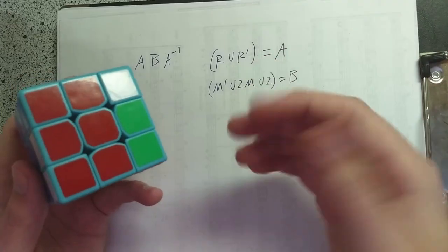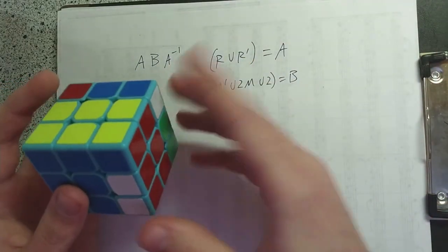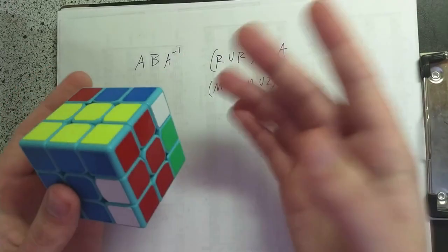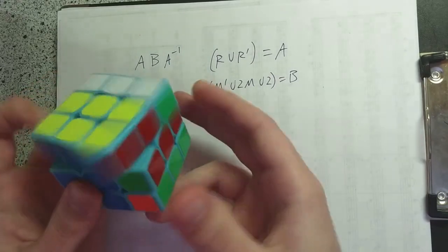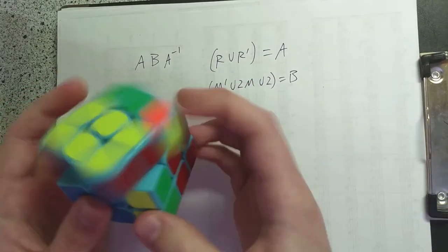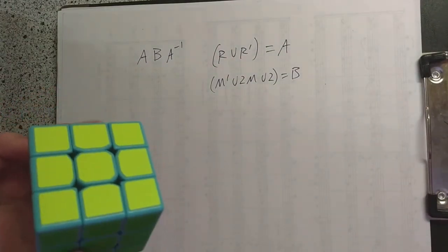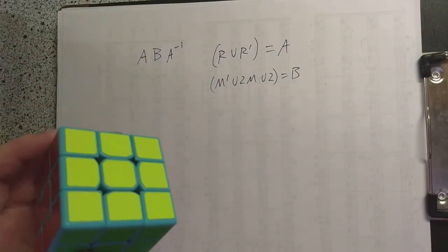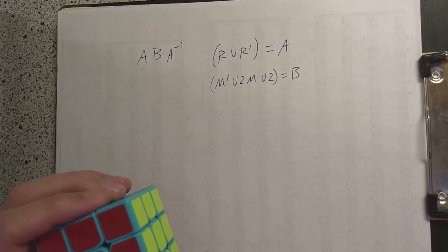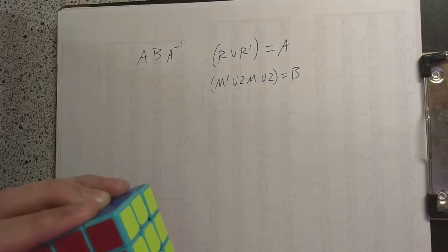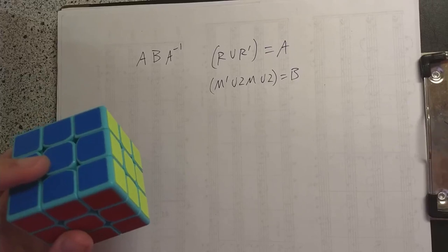We know already that the order of the move R is four, so it takes four R moves to get back to the beginning. So if we do this conjugated R, it'll also take four times to get back to the start. You can prove very systematically that the cycle structure of your permutation will be preserved, but in my opinion that proof isn't the most illuminating — it's mostly just a computation. But I will prove that conjugation preserves subgroups.